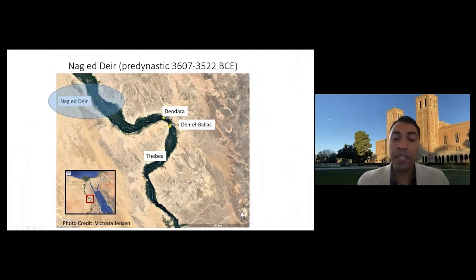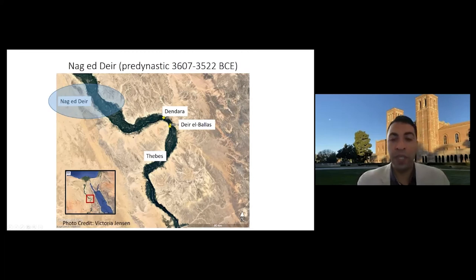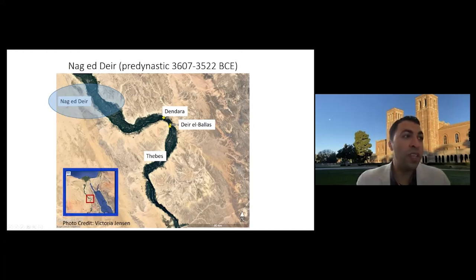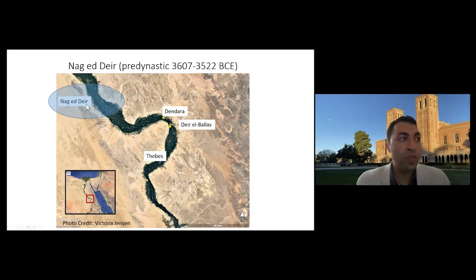I'm going to take you to an example of a site called Nag-Eder, dating to 3000 BC — over 5,000 years old — in the south of Egypt, in Upper Egypt, as you see here. It is north of Luxor, the famous site, as you see here.